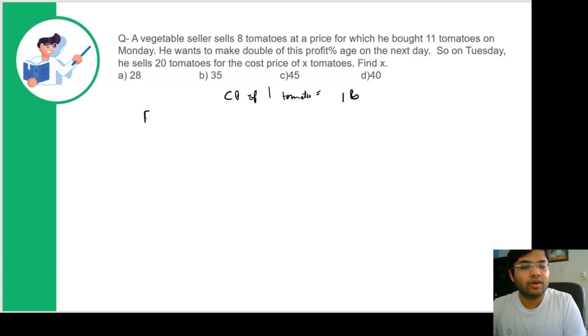So for 8 tomatoes, cost price would be rupees 8. He bought the 8 tomatoes at the price of 11 tomatoes, so selling price would be rupees 11 as each tomato costs rupees 1.